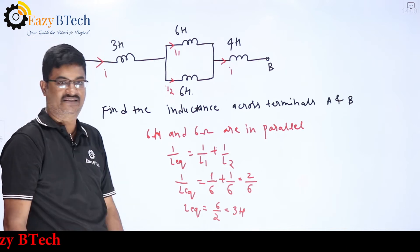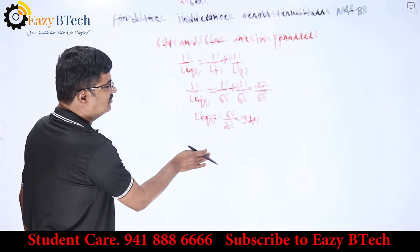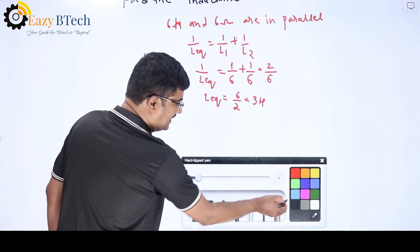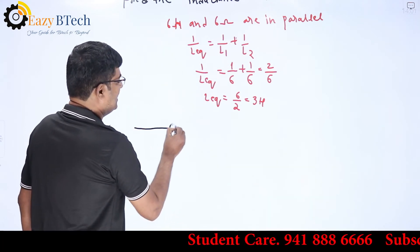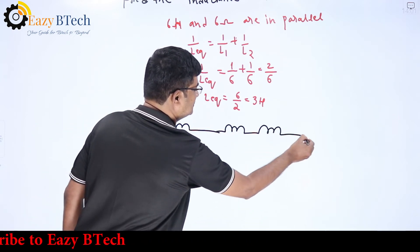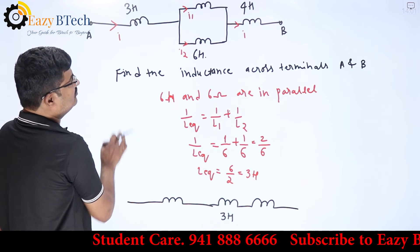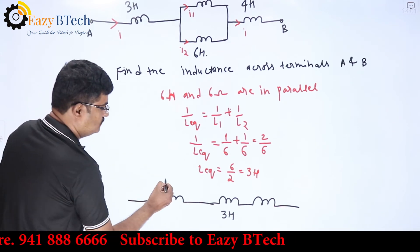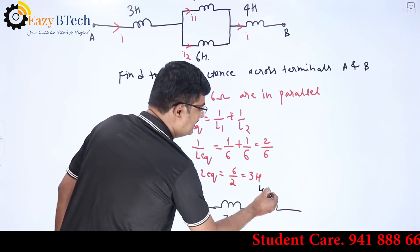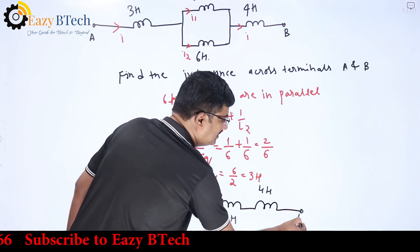The parallel combination of 6 Henry and 6 Henry gives us 3 Henry. Now I will redraw the circuit. The parallel combination is 3 Henry. In the redrawn circuit, we have 3 Henry, and already there is another 3 Henry, and a 4 Henry. Terminal A and terminal B are marked.